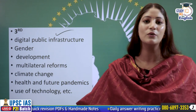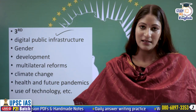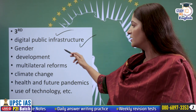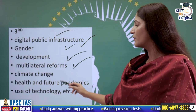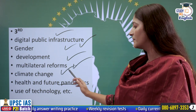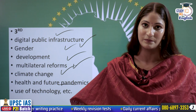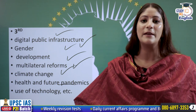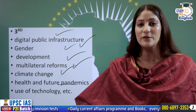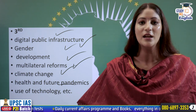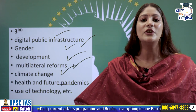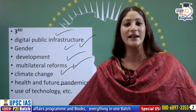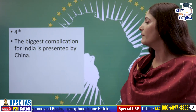Third, India is trying to push projects such as the digital public infrastructure, the success of UPI, gender, development, multilateral forums, climate change, health, and future pandemic use of technology among others. How can India reach its own ambitions, which should be aligned with the ambitions of the G20? This is another challenge for India because we have various sectors to take care of.